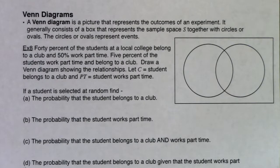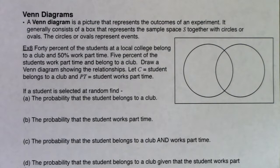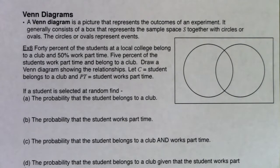We're going to move on to our next method, which is Venn diagrams. My guess is that you've seen a Venn diagram at some point in your life. A Venn diagram is a picture that represents the outcomes of an experiment. It generally consists of a box that represents the sample space S, together with circles or ovals that represent events.